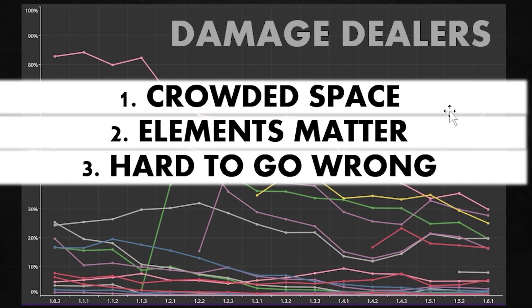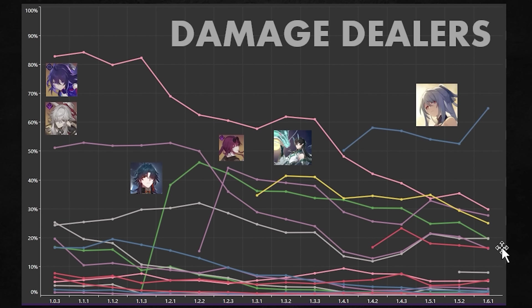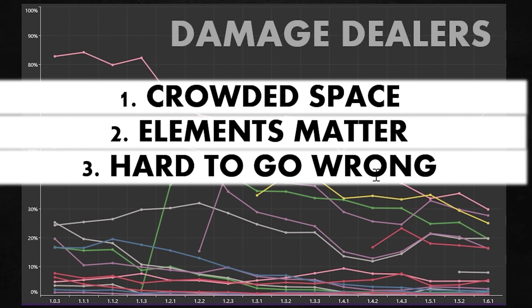To summarize into three parts for damage dealers: one, it's a very crowded space — don't feel bad if your DPS generally lowers in value. Based on history, everyone has a drop in value over time, and it's a natural phenomenon. Two, elements do matter a lot. If your DPS is the same element as an upcoming DPS, expect some competition — that's when power creep actually happens. Three, the honest truth is it's very hard to go wrong. You could pretty much plug and play most limited 5-star DPSs and they will more or less be okay. Even though appearance rate doesn't mean who is the best to clear, people still using older characters shows they are not completely useless. If you like them, you can't really go wrong — there's really no mistake.